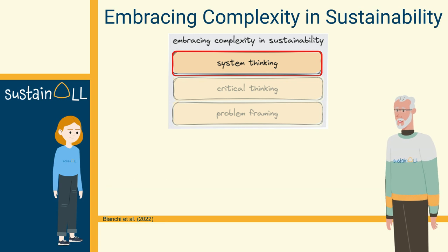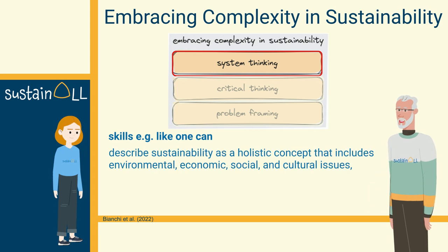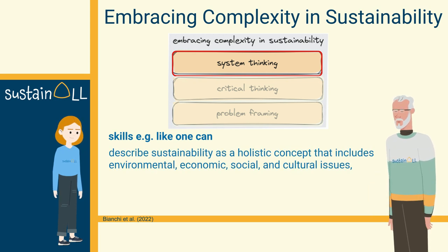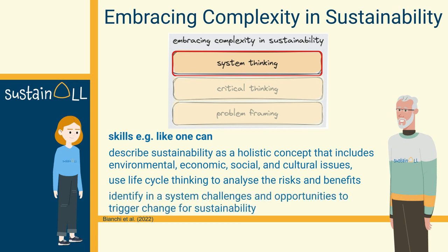But beyond knowledge, one also needs skills. A sustainability competent person can describe sustainability as a holistic concept that includes environmental, economic, social, and cultural issues. This person can also use life cycle thinking to analyze the risks and benefits of human action, and can identify in a system those challenges and opportunities that have the greatest potential to trigger change for sustainability.